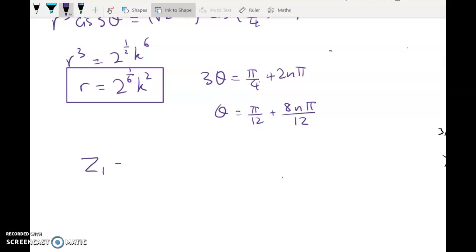So z1 is going to be 2 to the power of 1/6 k squared cis of pi on 12. Remember that these will be evenly spaced around the unit circle, so at angles like this, roughly.